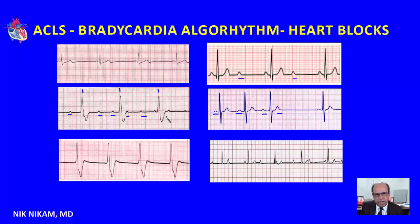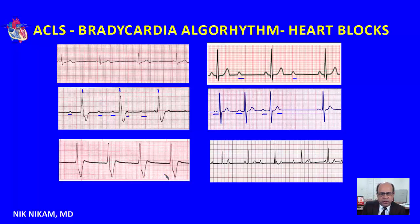In this situation, an immediate transcutaneous pacemaker or transvenous pacemaker may be the most appropriate choice. We can try epinephrine and dopamine to maintain the blood pressure until we can implement pacing. Here is an example of an idioventricular rhythm in a patient with an acute inferior myocardial infarction. When you see this type of rhythm problem, more than likely these patients may end up needing pacing — either transcutaneous or transvenous.